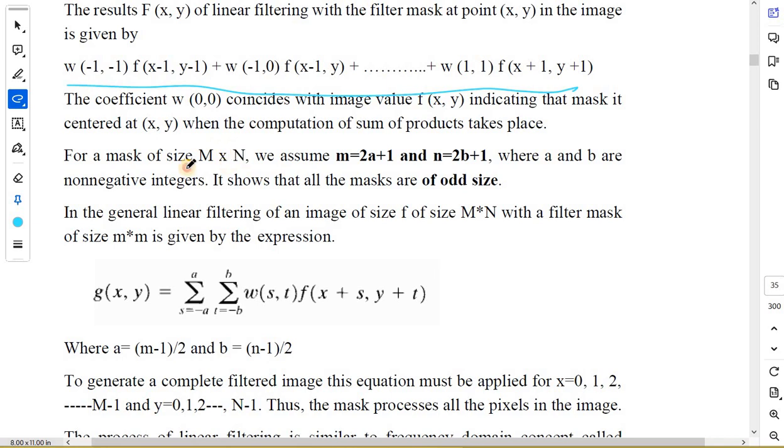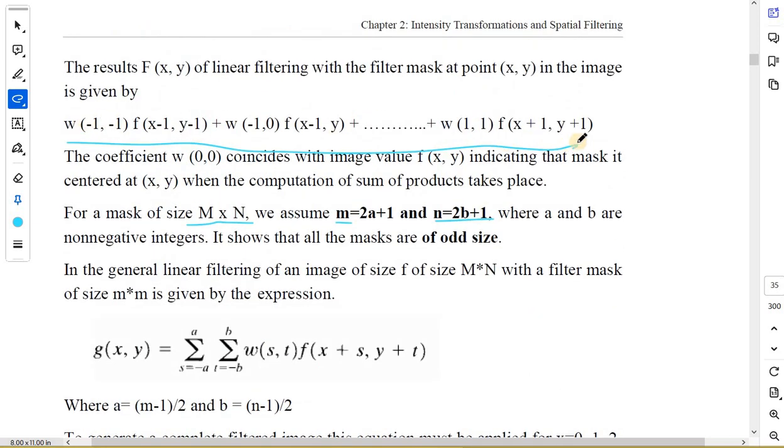When I say a mask is of size M into N, we are assuming that M equals 2a plus 1 and N equals 2b plus 1. What are a and b? They are non-negative integers. I have already told you why we need a mask of odd size - because if we consider a mask of even size like 2 by 2 or 4 by 4, then I cannot get the center pixel which I want. Why are we writing this as 2a plus 1 and 2b plus 1? Because we want to generalize this equation for mask of any size.